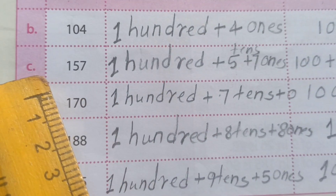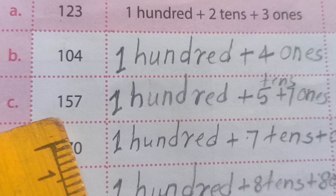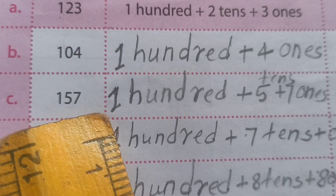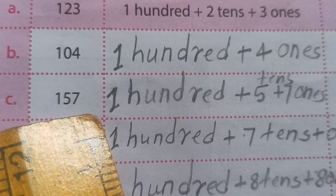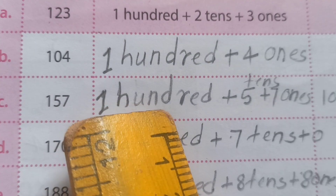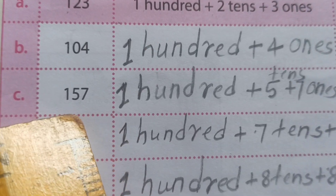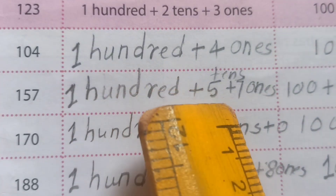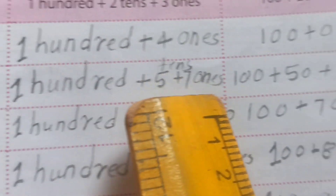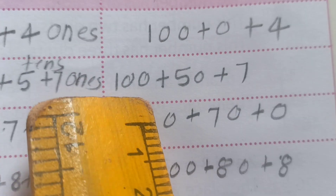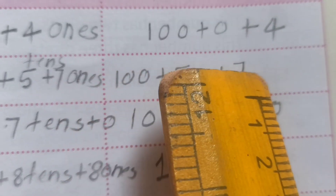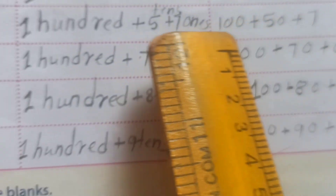Next one, C number example: 157. How we pronounce? 100 — H-U-N-D-R-E-D, 100. 50 means 5 tens. 7 means 7 ones. So: 100 plus 50 plus 7 ones.